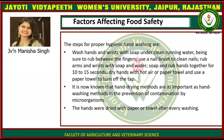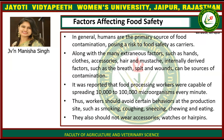Hands should be dried with paper or a towel after every washing, because hand dryers can also be a source of contamination by microorganisms. In general, humans are the primary source of food contamination, posing a risk to food safety as carriers.